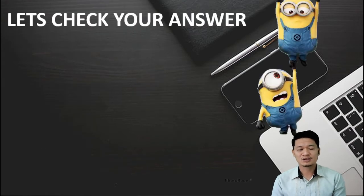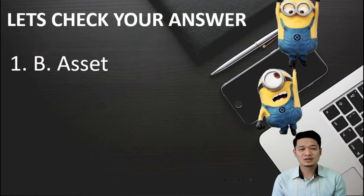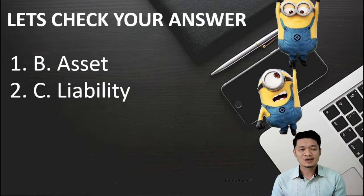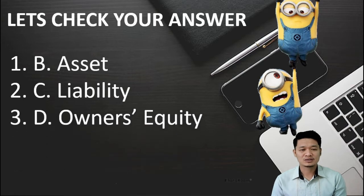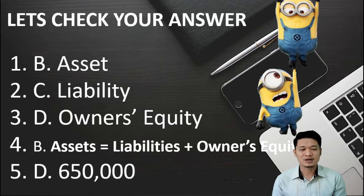Now, let's check your answers. For number 1, the correct answer is B, asset. For number 2, the correct answer is C, liability. For number 3, the correct answer is letter D, owner's equity. For number 4, the correct answer is letter B, assets equals liabilities plus owner's equity. And for number 5, the correct answer is letter D, 650,000 pesos.